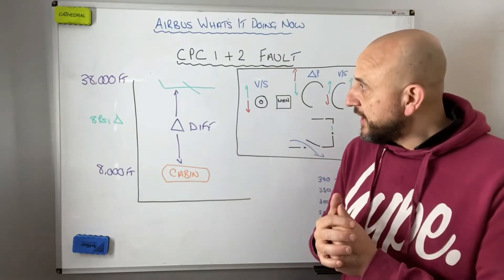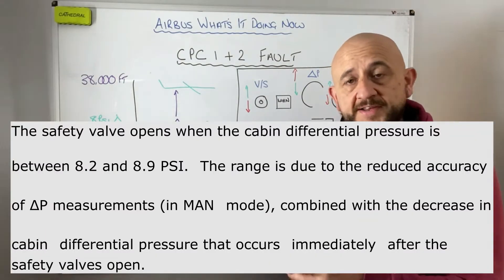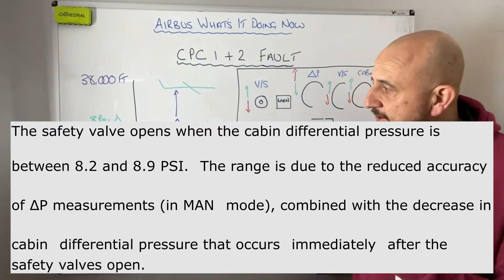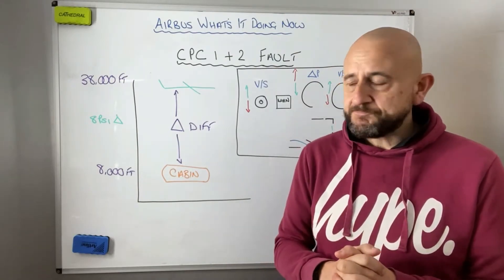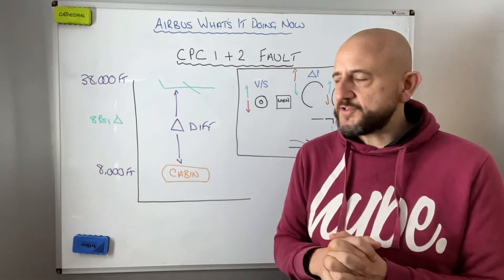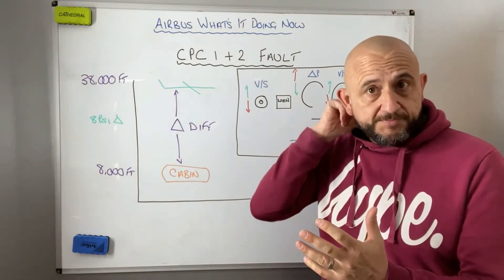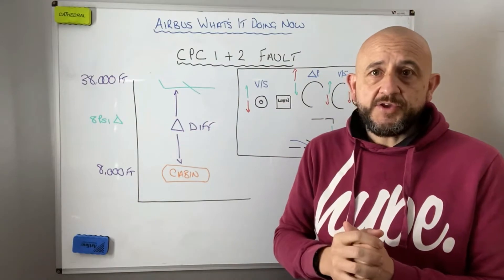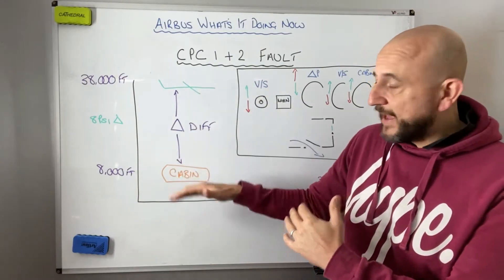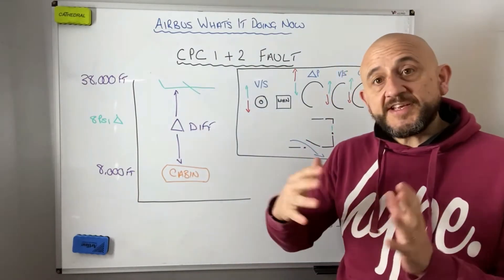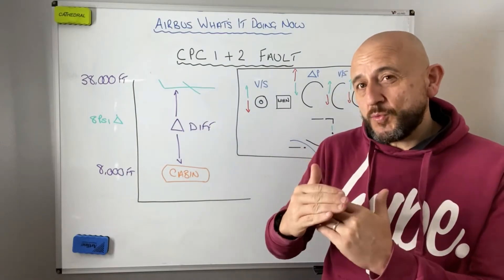The aircraft is very good at maintaining a positive differential but not a negative one. Depending on whether you're in automatic or manual, the maximum positive differential is somewhere between 8.2, 8.6, and up to 8.9 PSI. The negative differential limit is minus one. The aircraft doesn't like negative differential — there are some protections to help with that — but suffice to say positive differential is good.